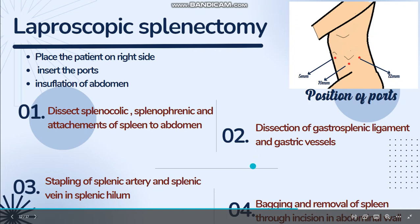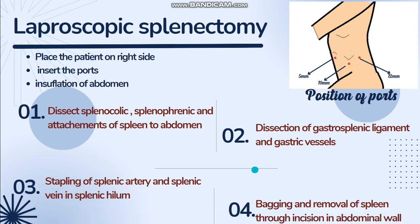After all this dissection, we will proceed with bagging and removal of the spleen. A self-sealing retrieval bag is introduced through the incision after removal of the 12 mm port. The spleen is placed in the bag and pulled out through the abdominal opening. A hand-assisted procedure can be used if the spleen is grossly enlarged.